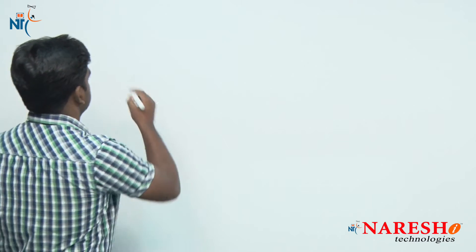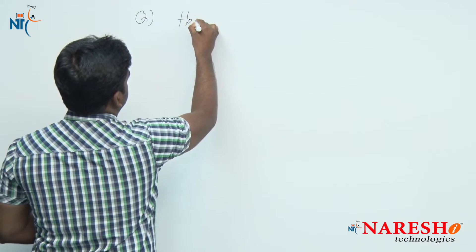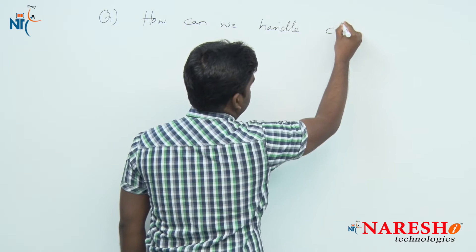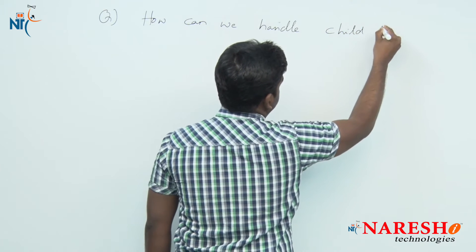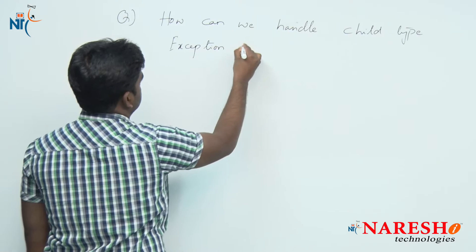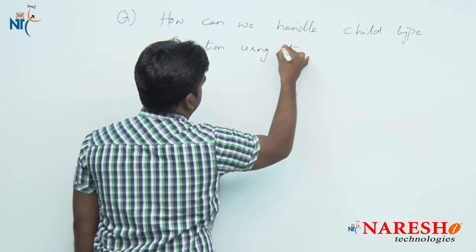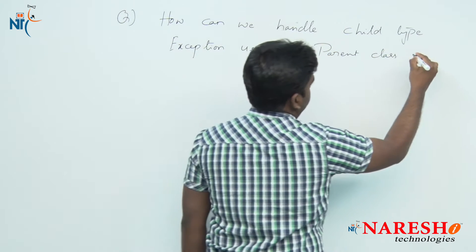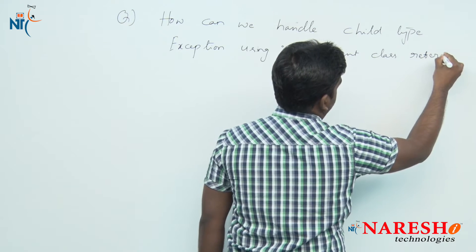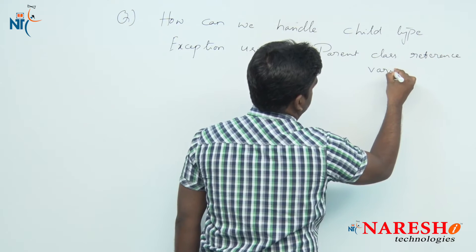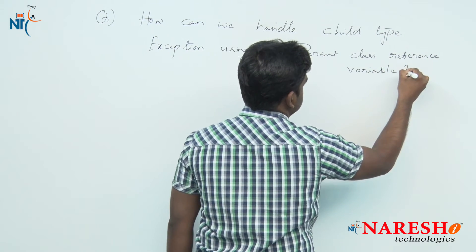That is: why is it allowed to handle a child type exception using a parent type exception class? The question is: how can we handle the child type exception using its parent class reference variable — why is it allowed?